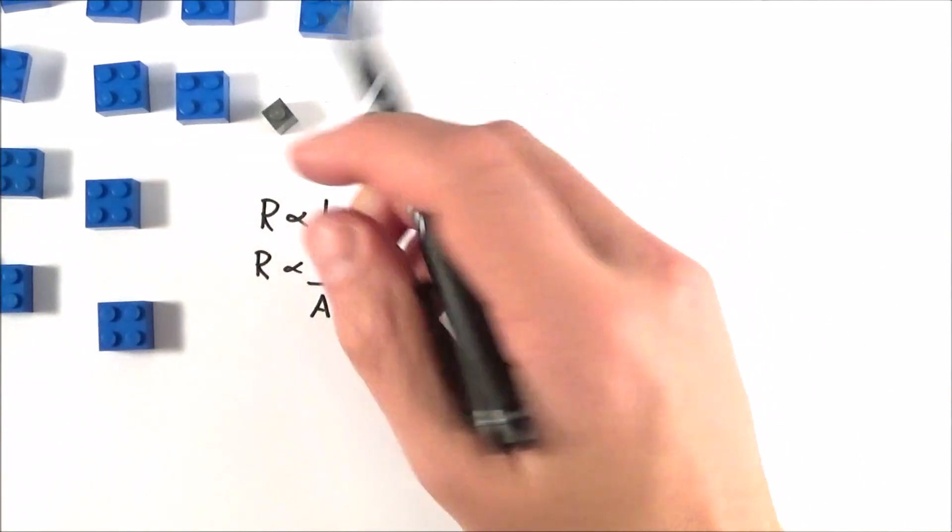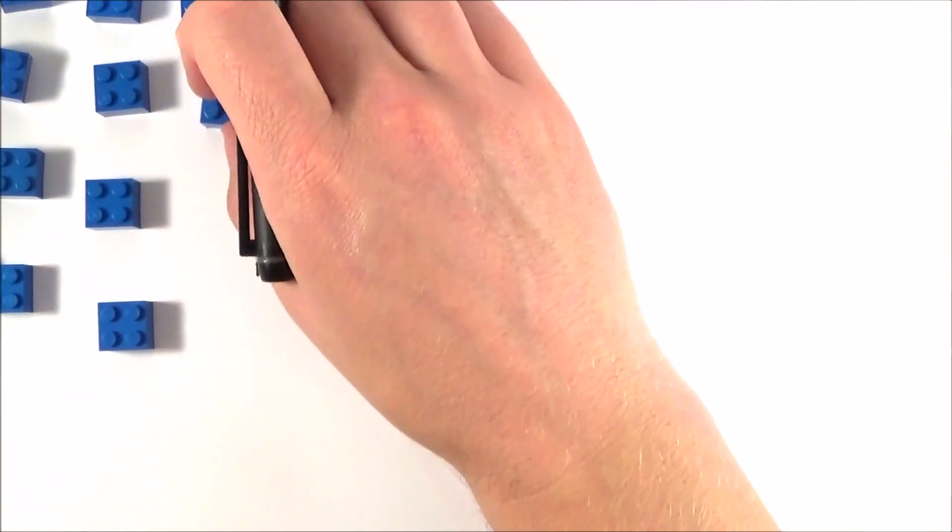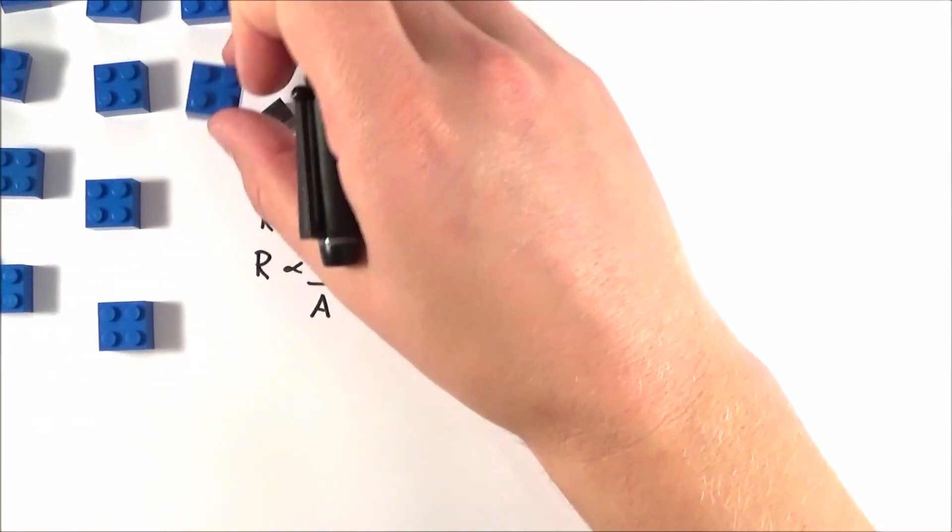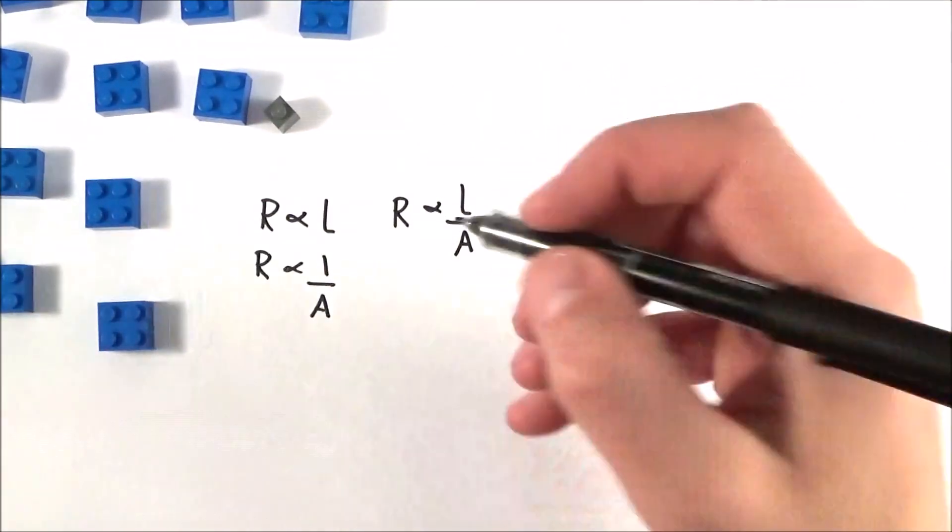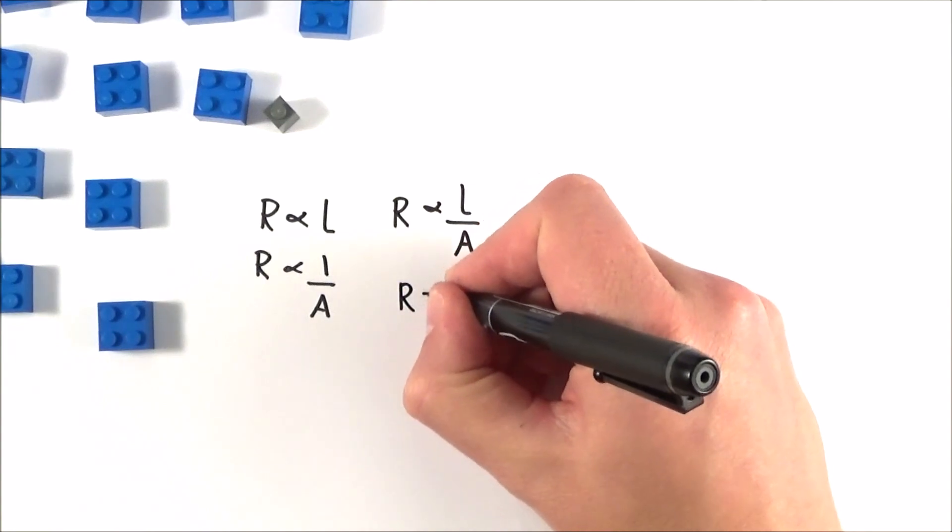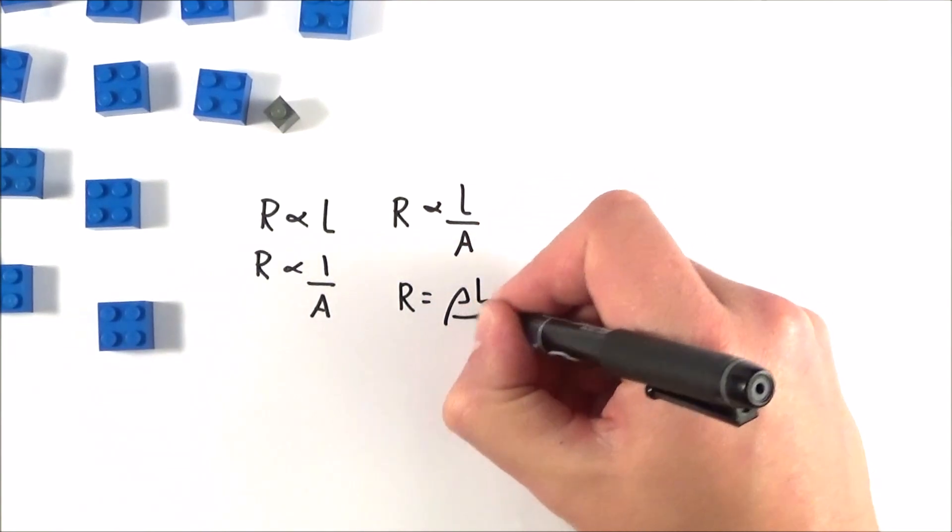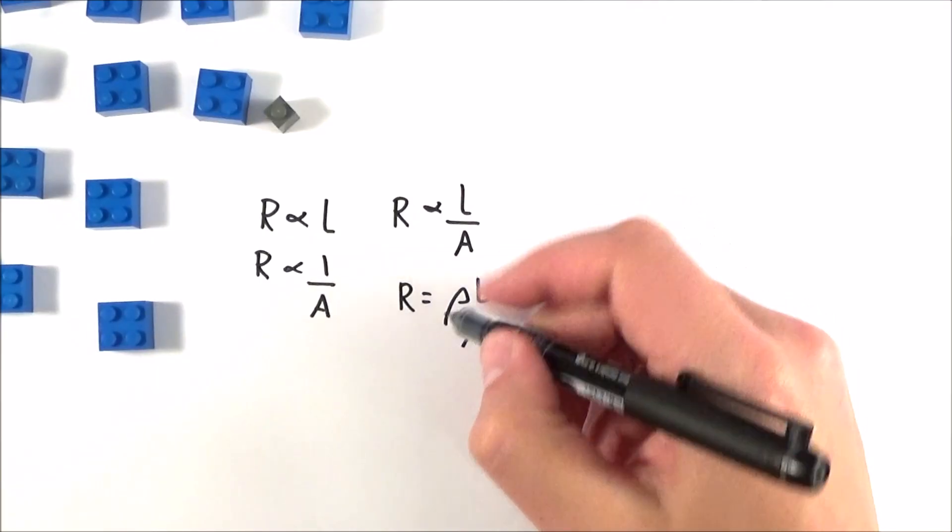Now provided we have the same kind of metal, the same kind of lattice at the same temperature so these things aren't vibrating too much, we can give this some kind of constant of proportionality. What we can say is that R is equal to ρL over A.